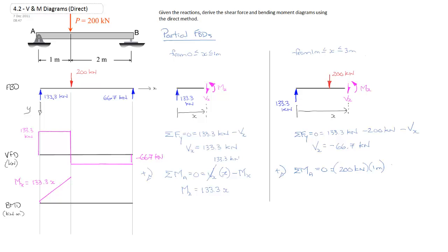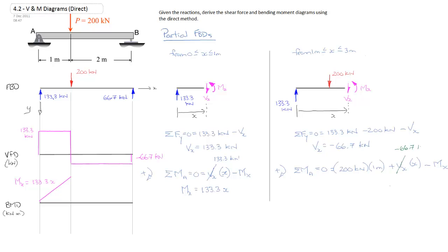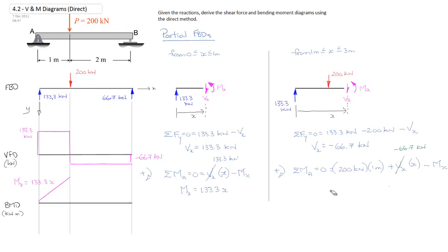And we have v at x multiplied by x, again, turning it positive, less m at x. So we'll substitute in, again, our minus 66.7 kilonewtons for our v at x, as we solved for just previously, which is equal to 200 kilonewtons meters minus 66.7 kilonewtons times x.